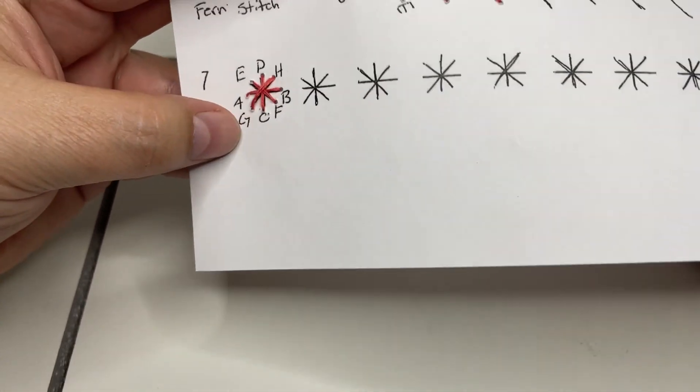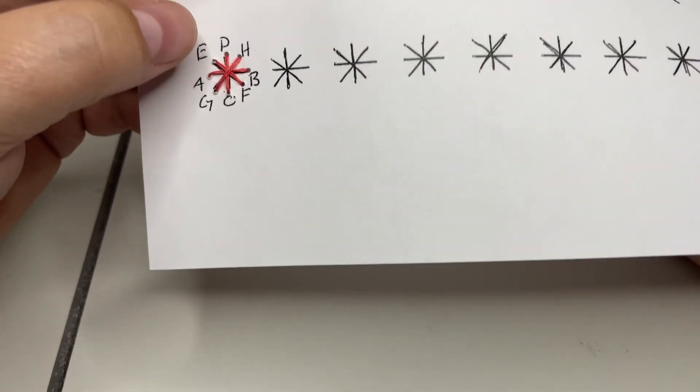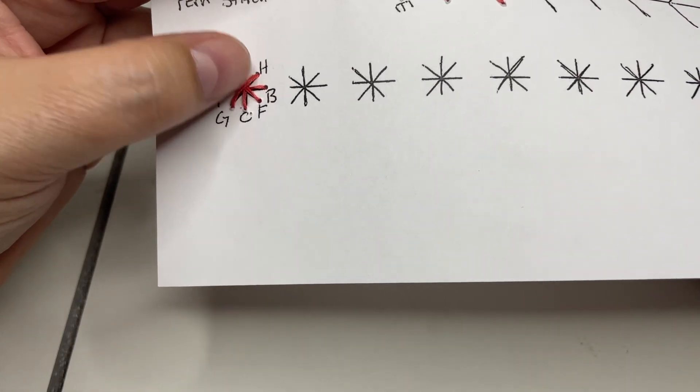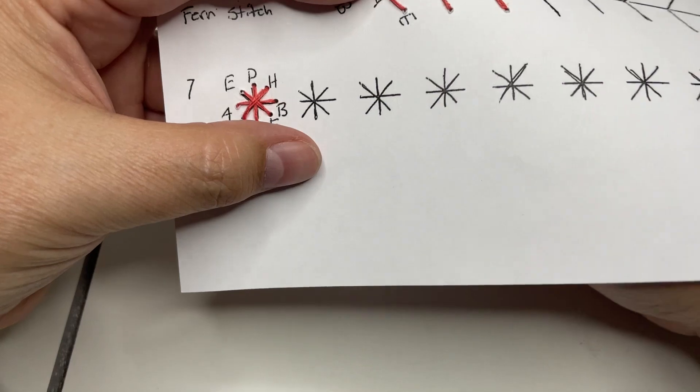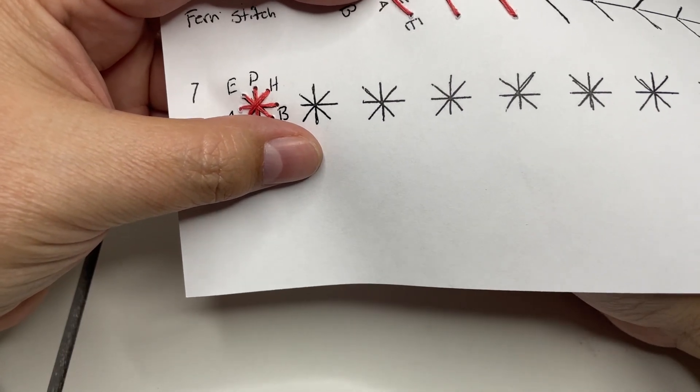Now the downside to this one is it's a little bit bulky right here in the middle because we've gone through it a couple different times. So you could do kind of the fern method where you just do each point as you go through.